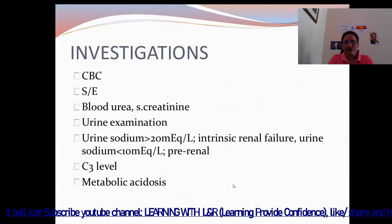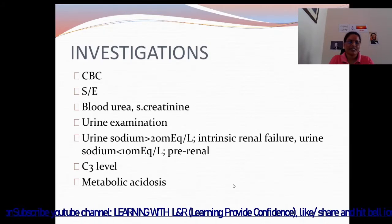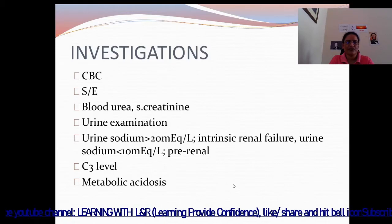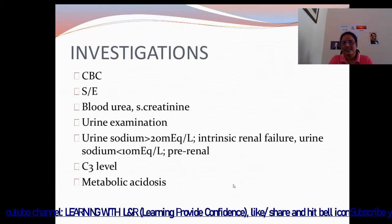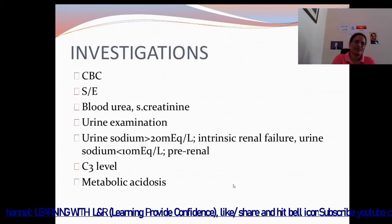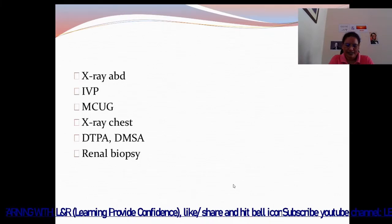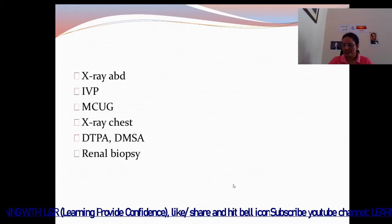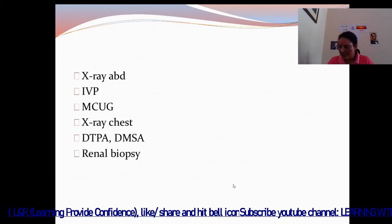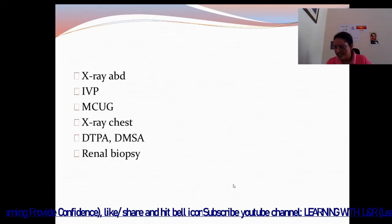Investigations include complete blood count and systemic examination, blood urea, serum creatinine, urine examination, and urine sodium. Urine sodium more than 20 mEq per litre indicates intrinsic renal failure; urine sodium less than 10 mEq per litre indicates pre-renal. Also C3 level, metabolic acidosis, and abdominal X-ray. IVP — intravenous pyelogram — is a radiological procedure used to visualize the kidneys and genitourinary system.